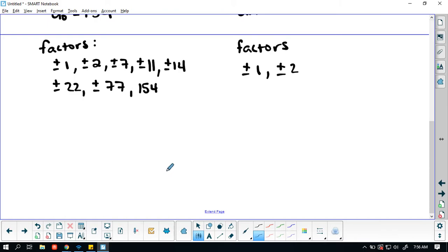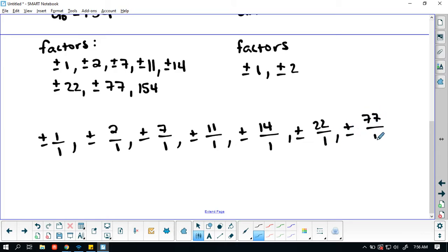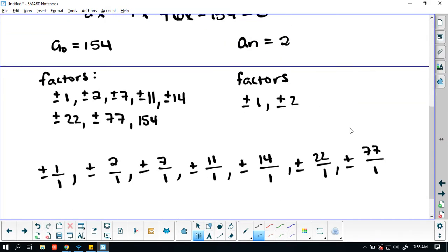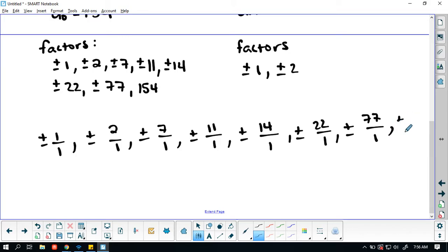Alright, so right away I am looking for all possible rational roots and we're going to eliminate any repeating values because we don't need it multiple times. So we have plus or minus 1 over 1 then we have plus or minus 2 over 1 plus or minus 7 over 1 plus or minus 11 over 1 plus or minus 14 over 1 plus or minus 22 over 1 plus or minus 77 over 1. And by the way now we're looking at our factors that we'll make this equal to 0. And then we have plus or minus 154 over 1.